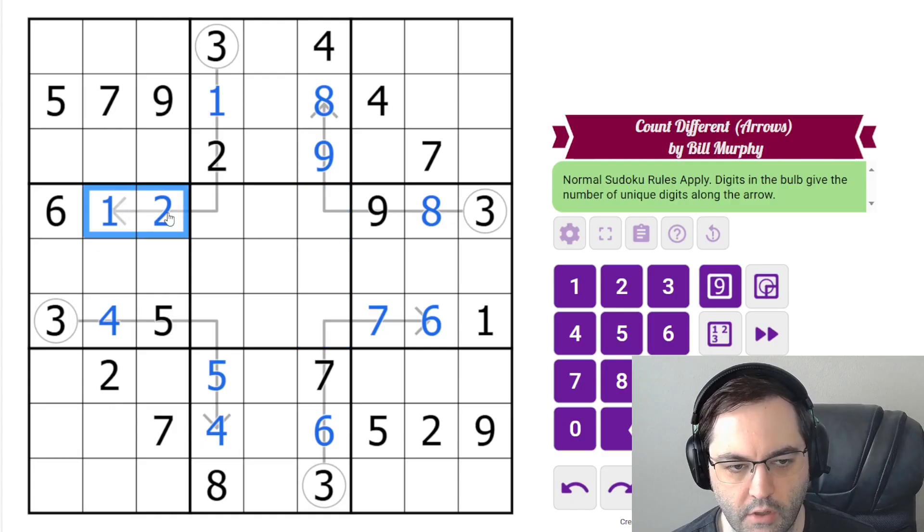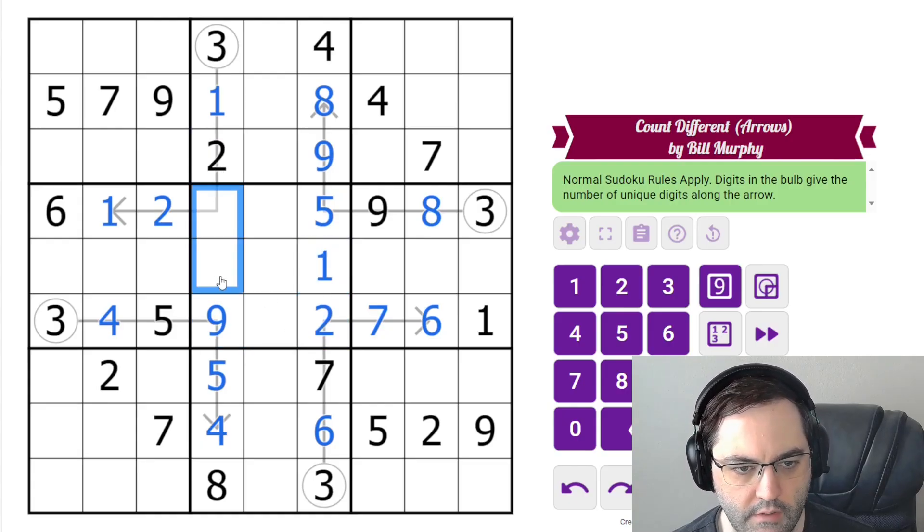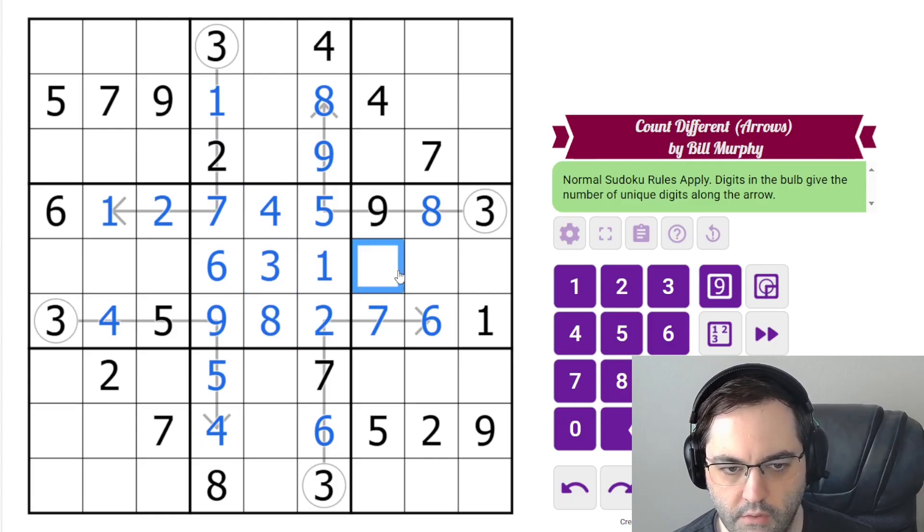We can probably figure out what these are though. We're missing one, two, five in the column. We have one, two here. So this is five. Two, eight, nine here. This must be nine. These are one and two. And these are six and seven. And then to finish the central box, we get those digits.